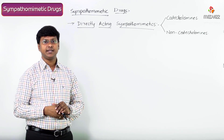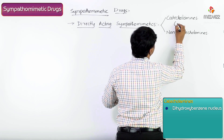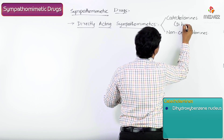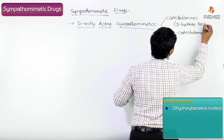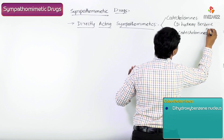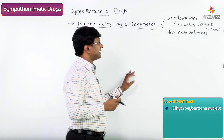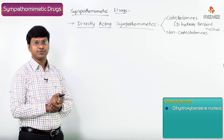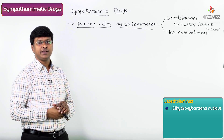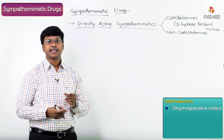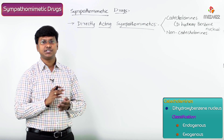The catecholamines contain a dihydroxybenzene nucleus. Now, catecholamines are again classified into endogenous catecholamines and exogenous catecholamines.